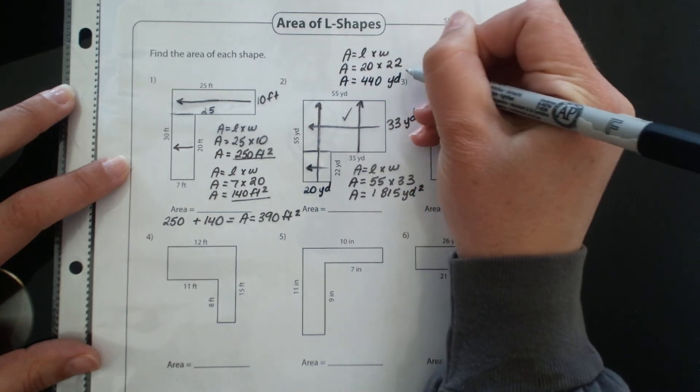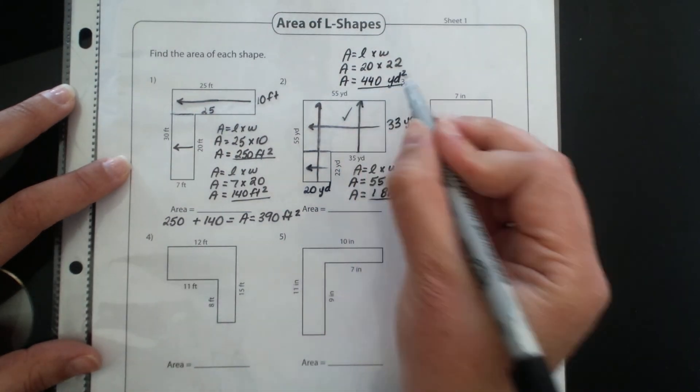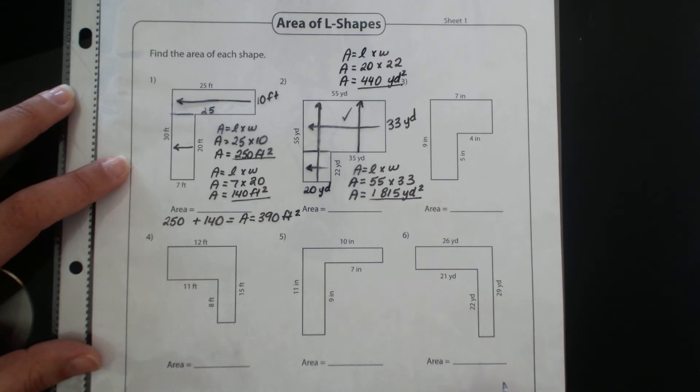Now I'm not quite done because I know I have the top shape and the bottom shape and my last step will be to simply add them together.